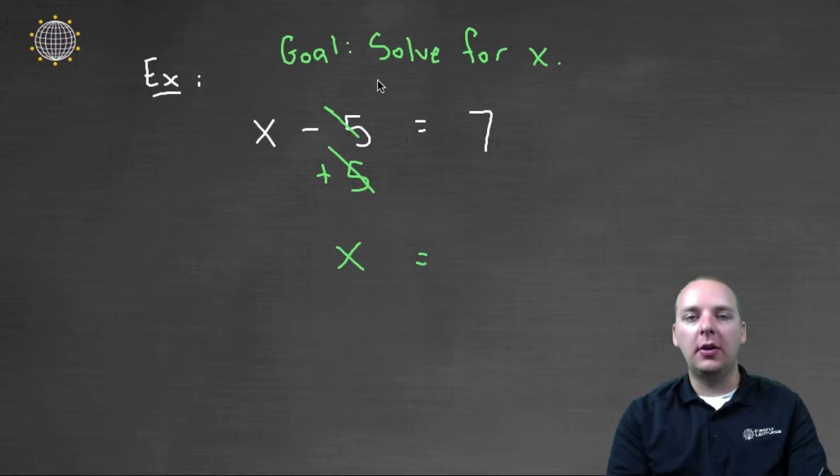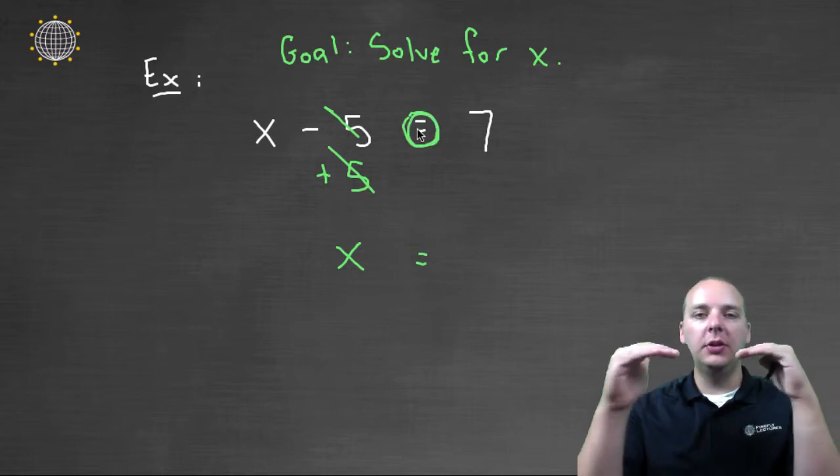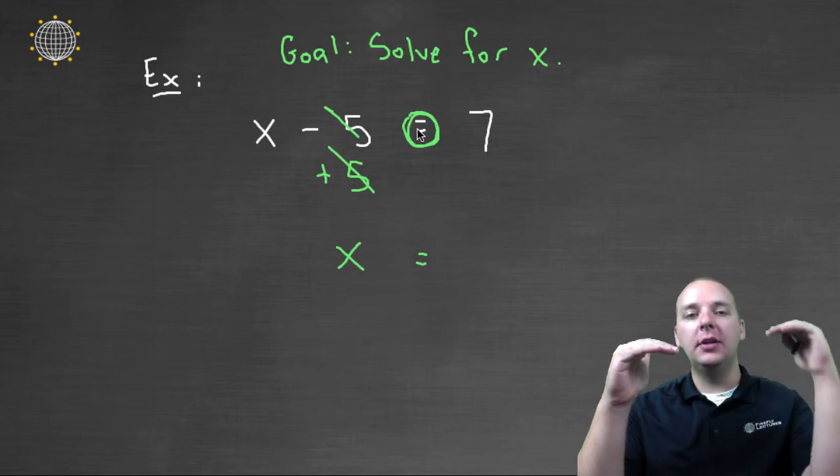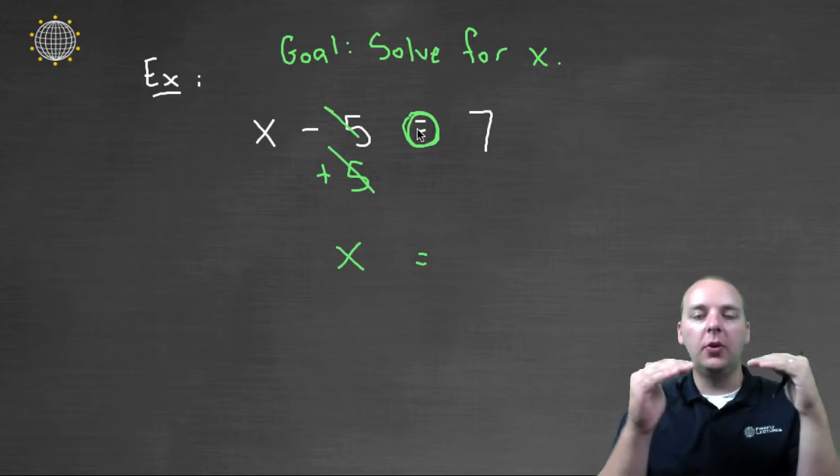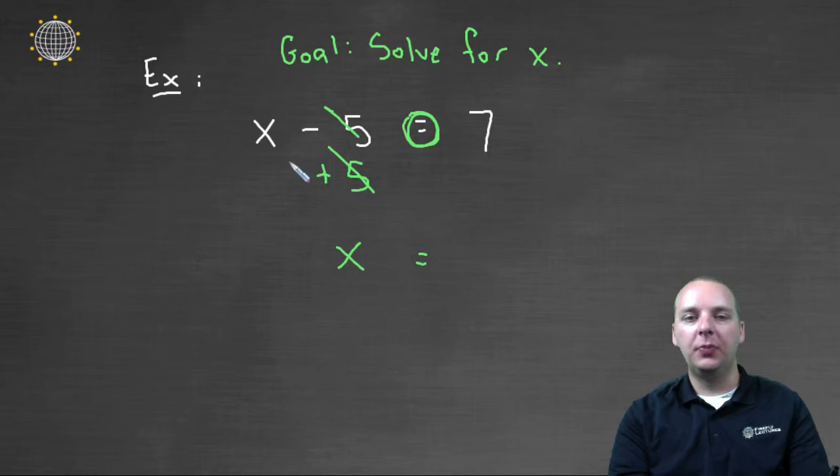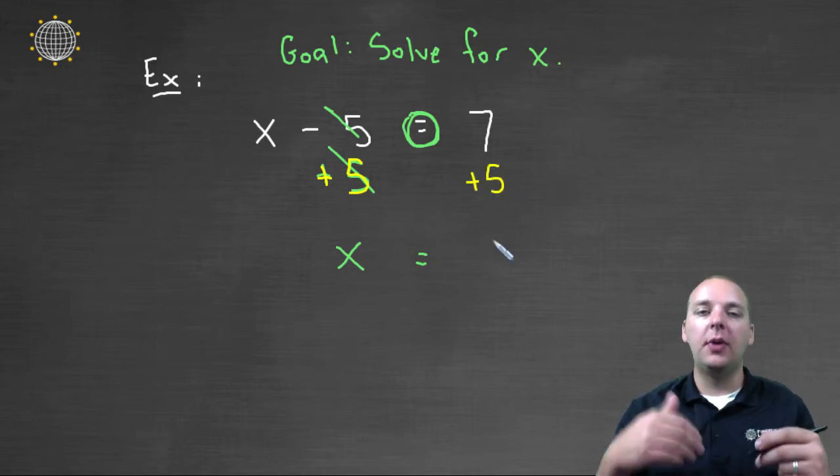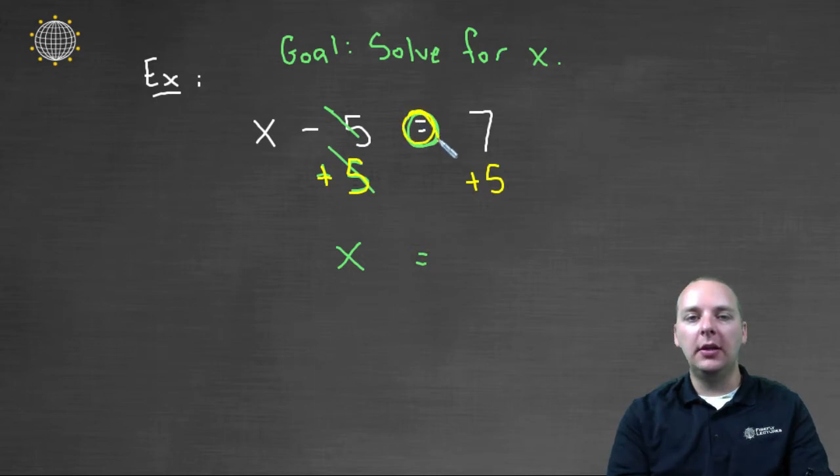But remember that scale that we talked about. If X minus five and seven are equal to each other, if we increase the left side by five, but not the right side also, the scale isn't equal anymore. So we can certainly increase the left hand side by five. No problems at all with that. But if we add five to the left hand side, we have to remember to also increase the right hand side by five as well,